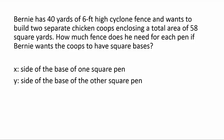Let X be the side of the base of one square pen and let Y be the side of the base of the other square pen. Since we have 40 yards of cyclone fence, the sum of the perimeters of both pens must be 40.